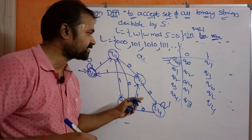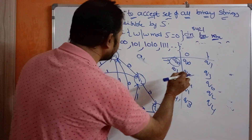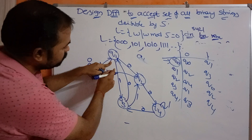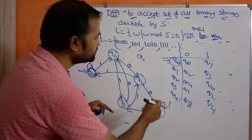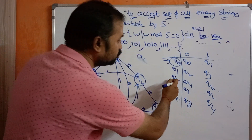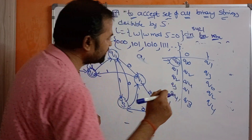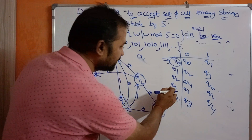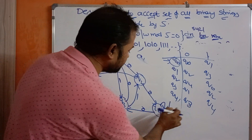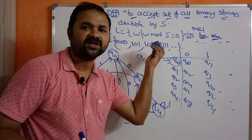Let us verify the transition table: q0 on 0 → q0 ✓, q0 on 1 → q1 ✓, q1 on 0 → q2 ✓, q1 on 1 → q3, q2 on 1 → q0 ✓, q4 on 0 → q3 ✓, q4 on 1 → q4 ✓. Everything checks out. You can design the DFA very easily from this transition table.